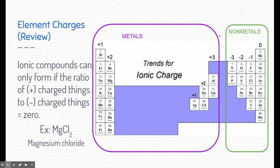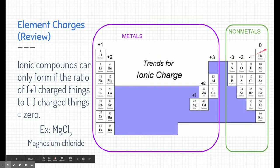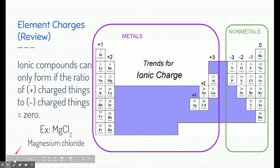Let's review charges. On the periodic table, elements and families have standard charges for the most part. Alkali metals have a plus one charge, alkaline earth metals have a plus two. All metals are positively charged, while nonmetals are negatively charged. So if it's a metal, it's positive; if it's a nonmetal, it's negative. Ionic compounds come together so the ratio of charges cancel each other out.